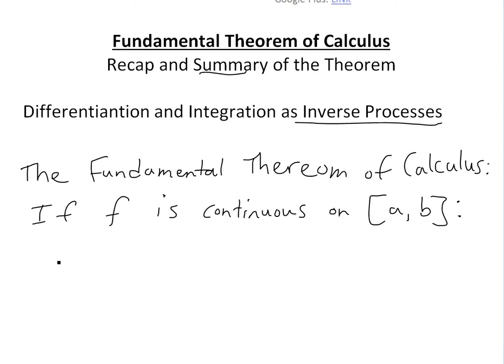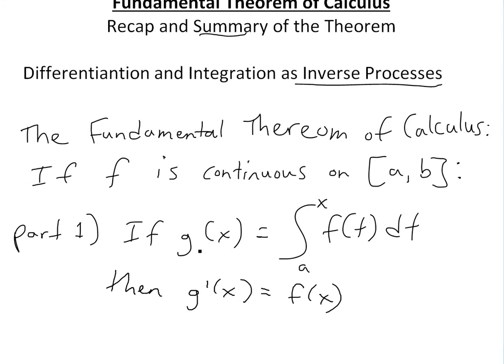So now if we look at part one of the theorem, part one just states that if you have g of x function is equal to the integral from a to x, where x is in between a and b of f of t dt, then g prime of x is equal to f of x here.